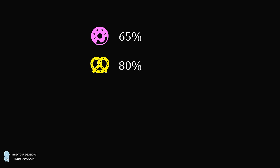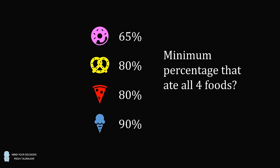Hey, this is Presh Toewalker. You're working at an amusement park, and the food vendors tell you what percentage of the visitors eat each of their foods: 65% eat a donut, 80% eat a pretzel, 80% eat a slice of pizza, and 90% have ice cream. The geniuses in marketing want to sell a bundle of all the foods, but they want to know how many people are actually interested in it. So they call upon you, a mathematician, to tell them what's the minimum percentage of visitors that must have eaten all four foods. I thank James for the suggestion. Pause the video if you'd like to give this problem a try, and when you're ready, keep watching to learn how to solve this problem.